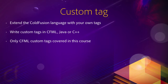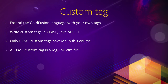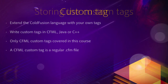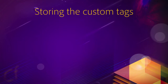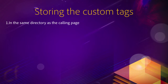A CFML custom tag is actually a regular .cfm file, but that file has to be stored in a very specific location. First, you can store your custom tag files in the same directory as the regular ColdFusion pages that are using those custom tags.